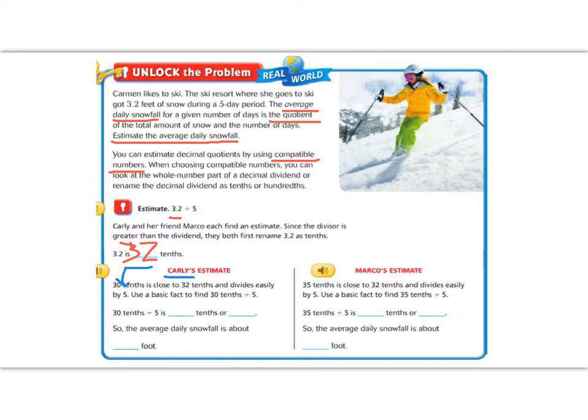30 divided by 5 equals 6, or 6 tenths would be 0.6, because remember it's 30 tenths. So this would be 6 tenths. So Carly says that the average snowfall is about 0.6 feet, a little more than half a foot.